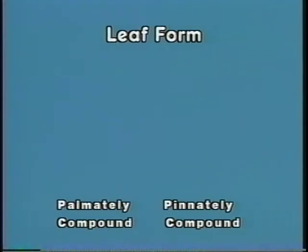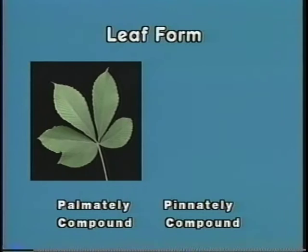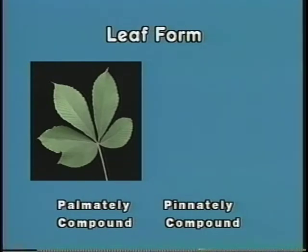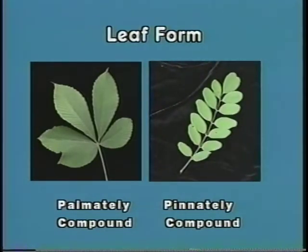When the leaflets are attached at a central point, the leaf is referred to as palmately compound, much like looking at the palm of your hand with the fingers radiating from the palm. Your fingers would be referred to as the leaflets and the total hand the leaf. When the leaflets are attached opposite along the primary vein of the leaf, the leaf is referred to as pinnately compound.